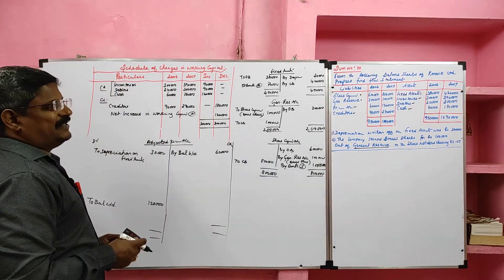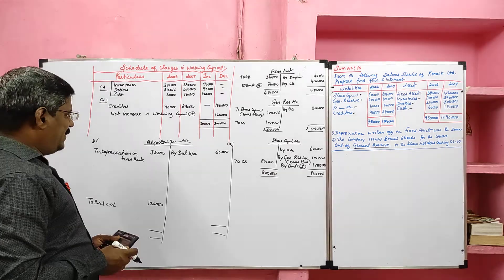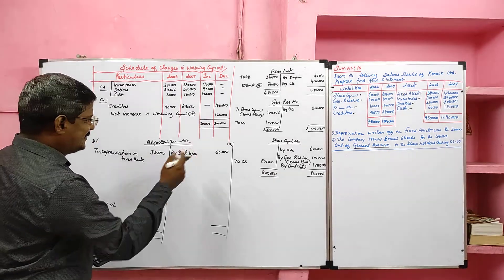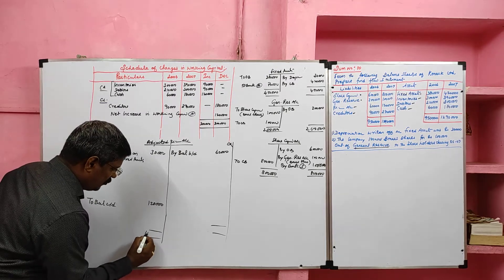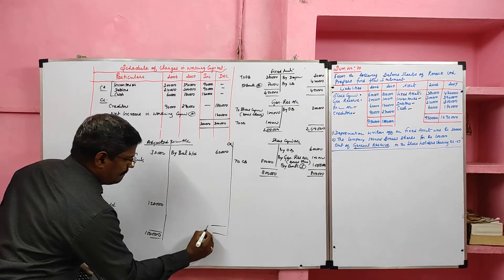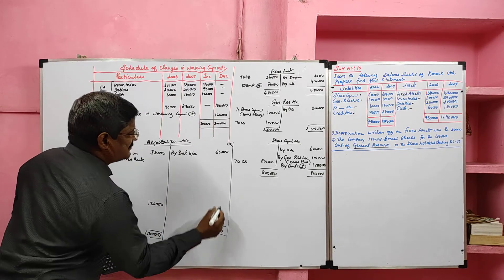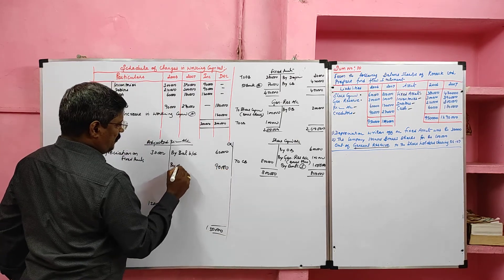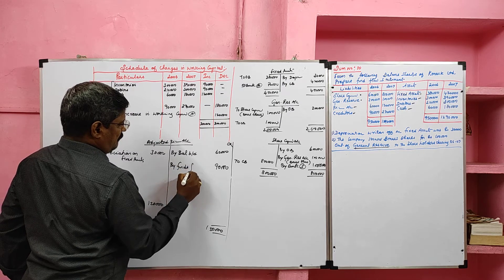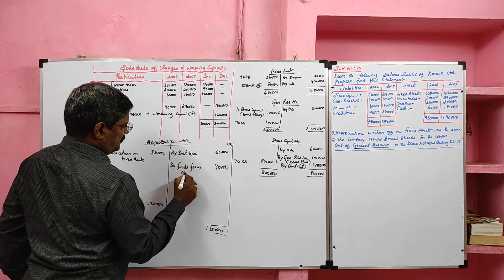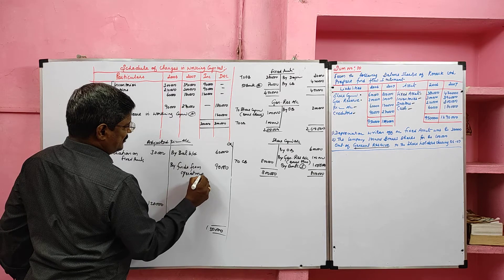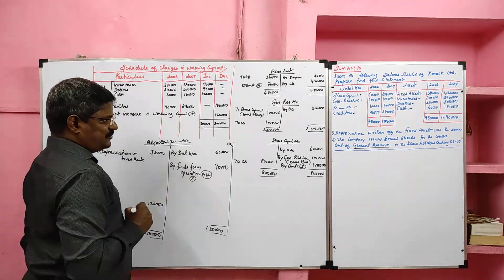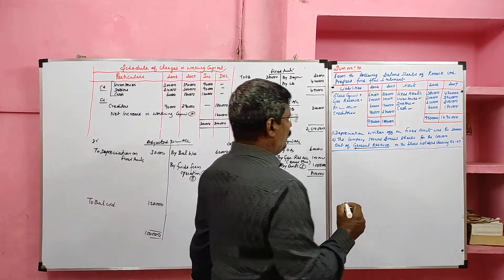We have prepared ledger accounts for all items in the balance sheet except current assets and current liabilities. Now balancing the adjusted profit and loss account: the debit side exceeds the credit side. Debit side total is 1 lakh 50,000; credit side value is 60,000. The difference of 90,000 is called funds from operations — a balancing figure that goes to the sources side of the fund flow statement.